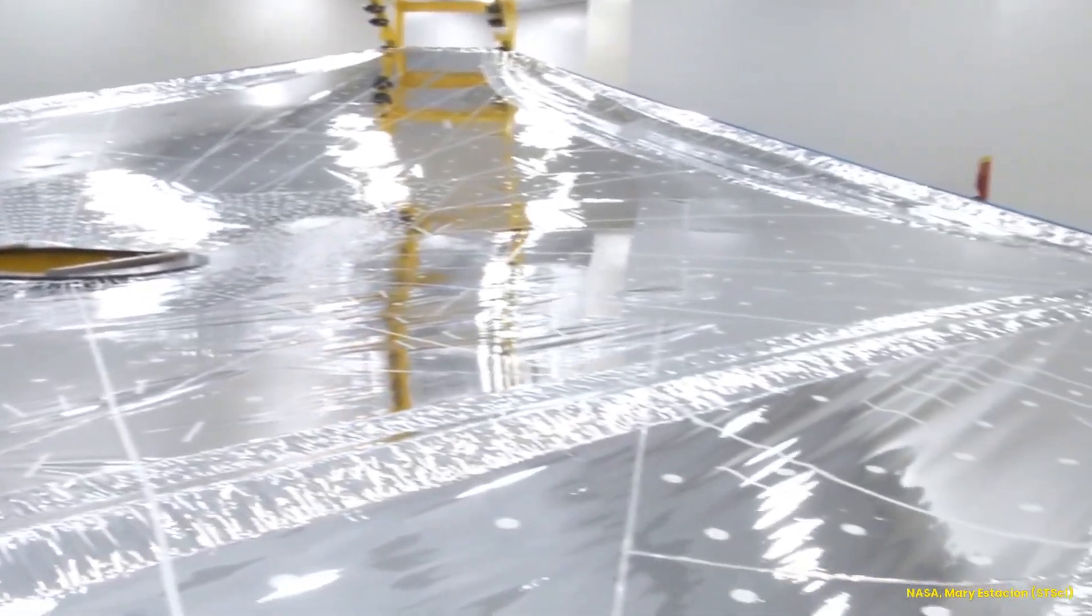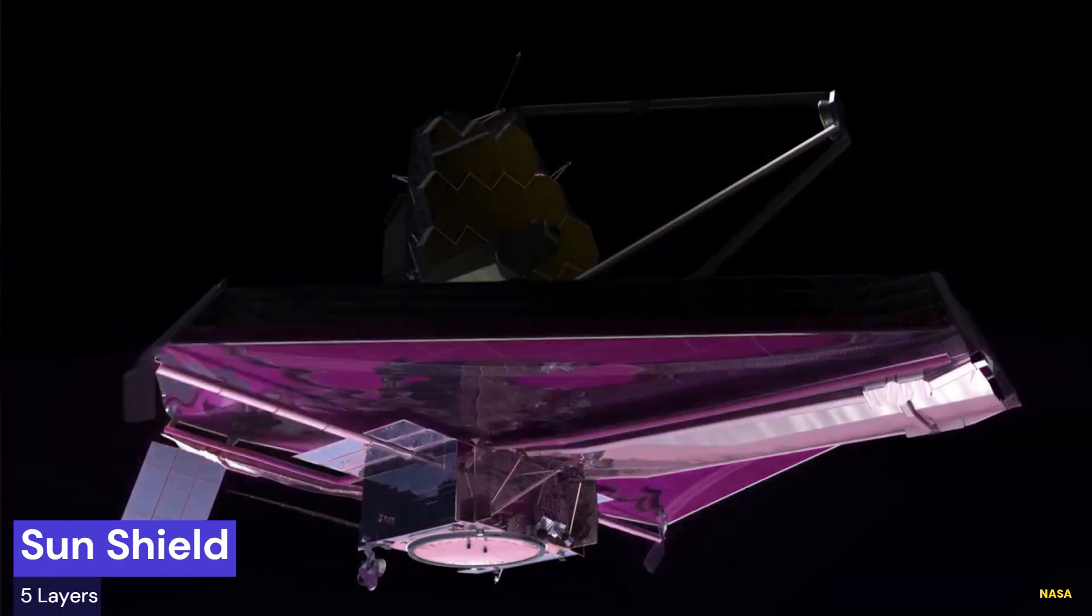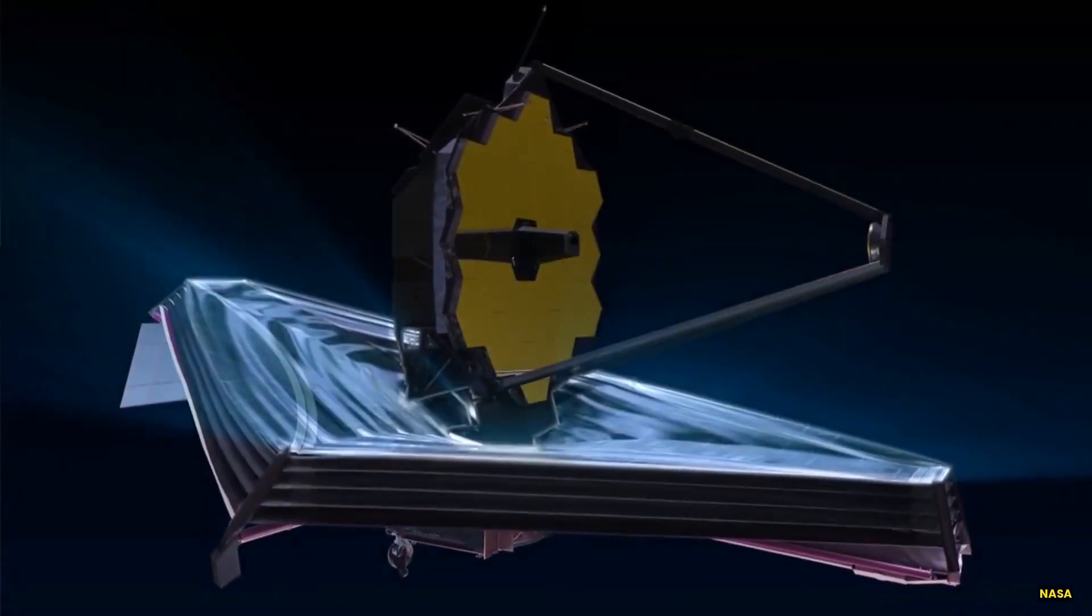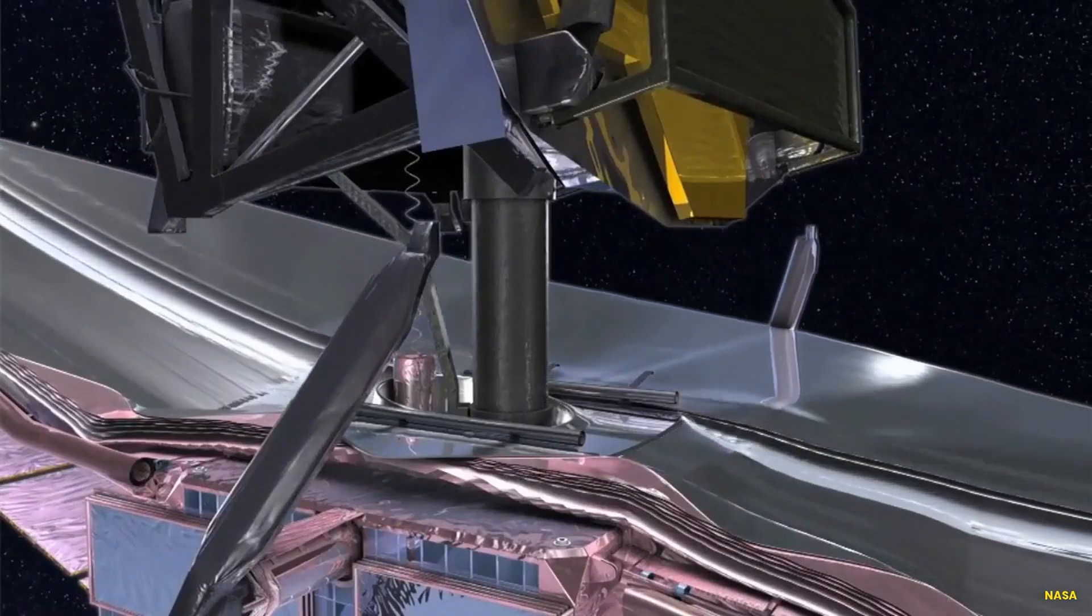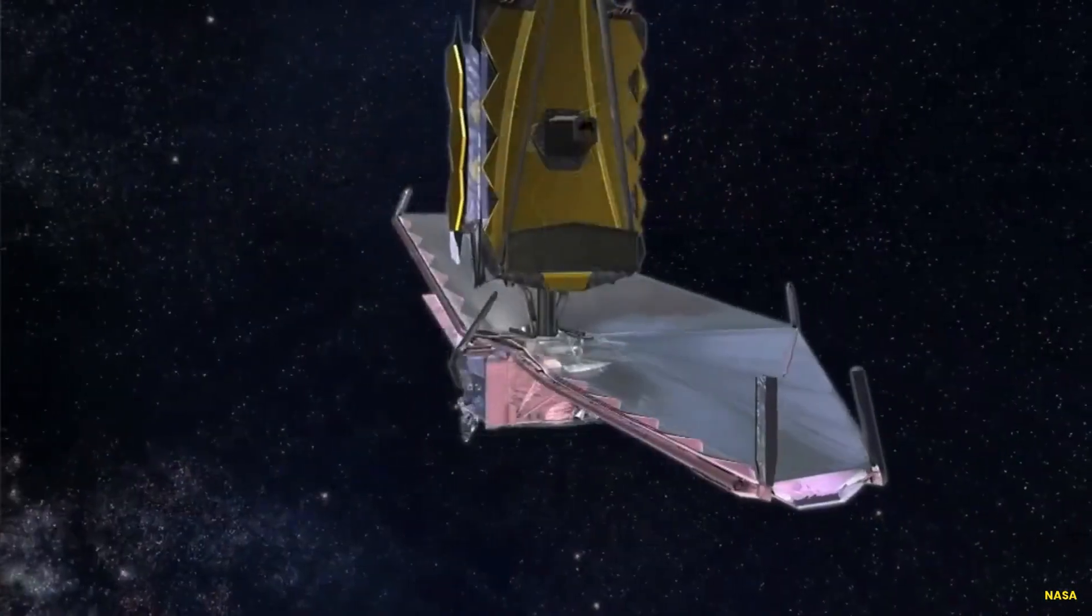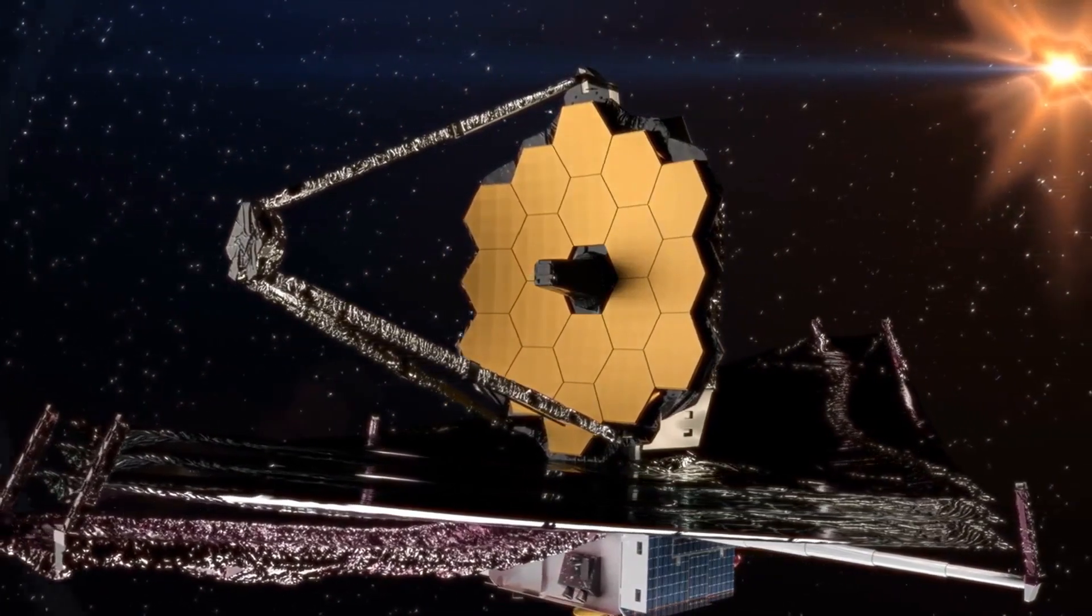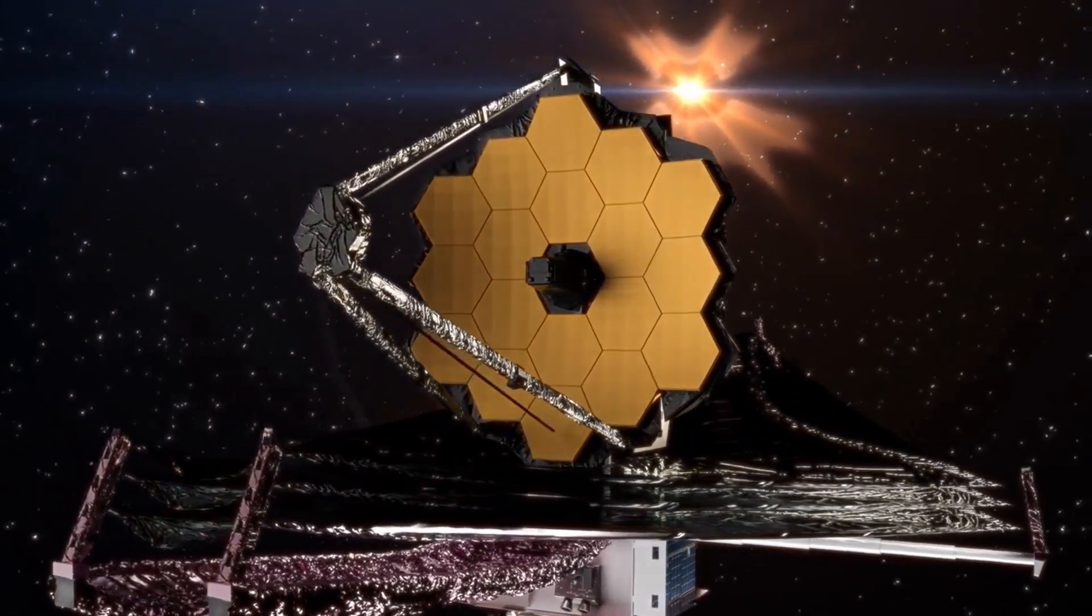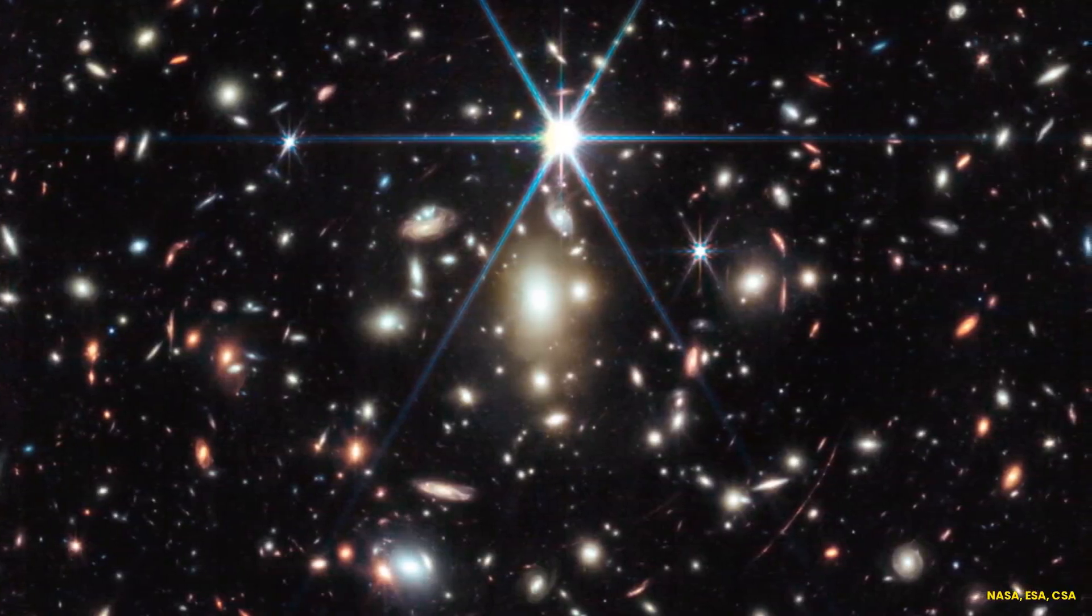JWST's intricate sunshield is roughly the size of a tennis court when fully deployed. The five-layer plastic sheet blocks heat sources using reflection, absorption, and infrared radiation. This keeps optics and instruments below 50 Kelvin for optimized infrared data collection. Unfurling flawlessly post-launch was an engineering triumph. After six months of mirror alignment, instrument calibration, and testing, the telescope reached full operational capability in July 2022. The first stunning test images proved it will meet or exceed all expectations.